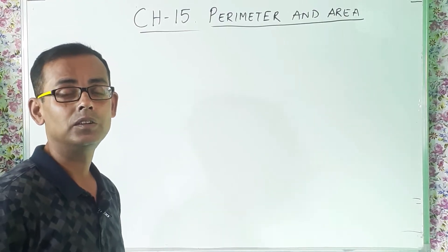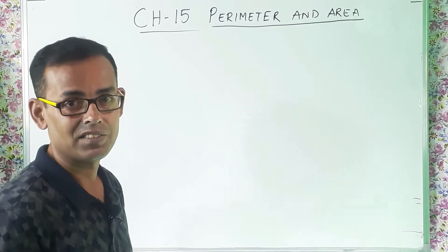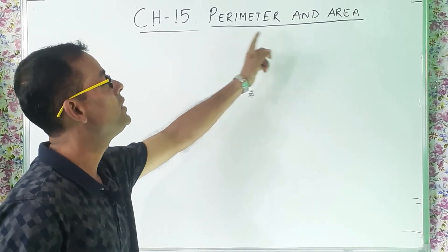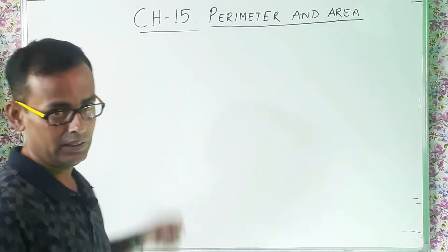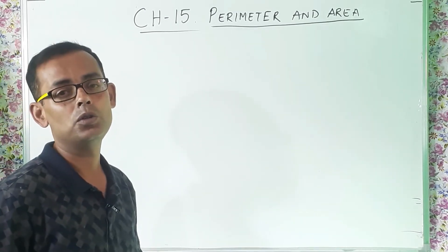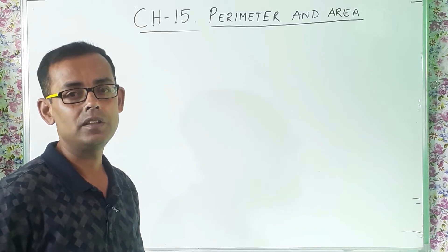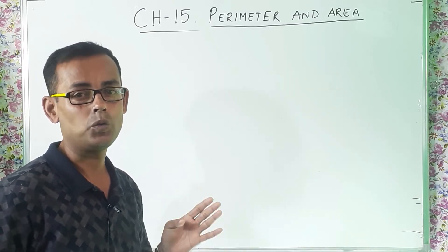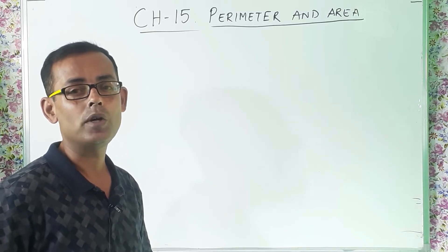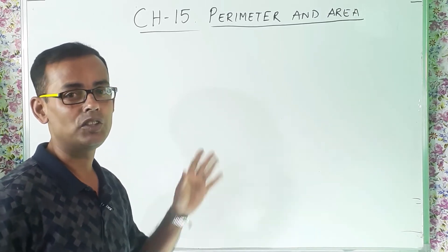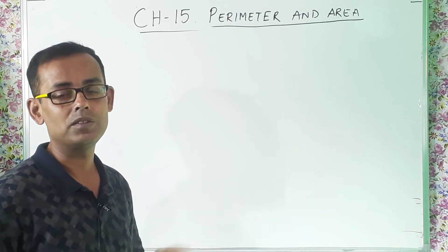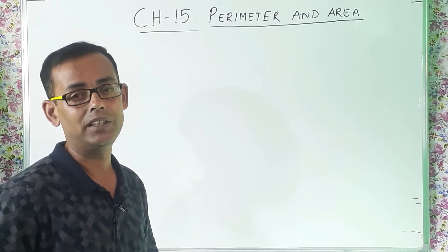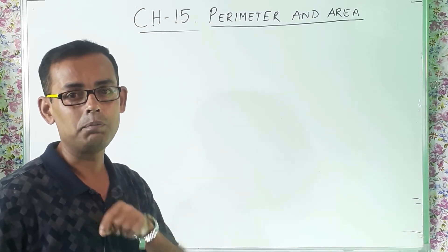Today we will do class 6 mathematics and the name of the chapter is Perimeter and Area, Chapter 15. Previously we have done two classes — part 1 and part 2. Those who have not watched part 1 and part 2 of this chapter, please watch it so you can understand more nicely. I have shared the link in the description below.